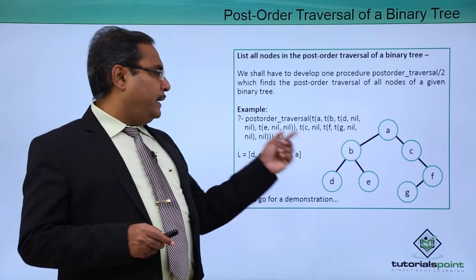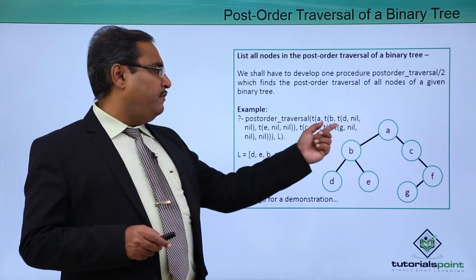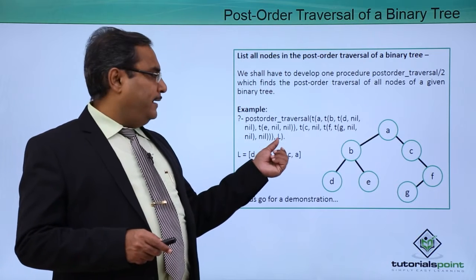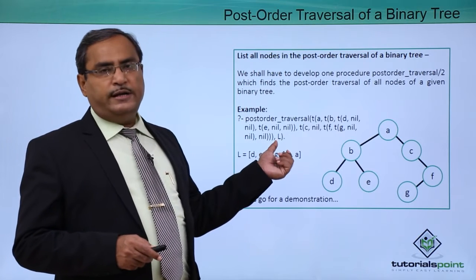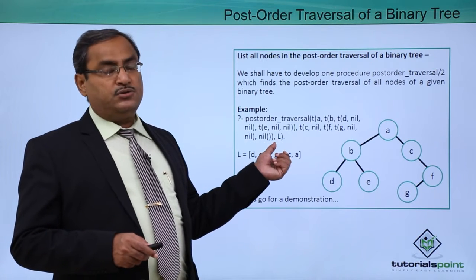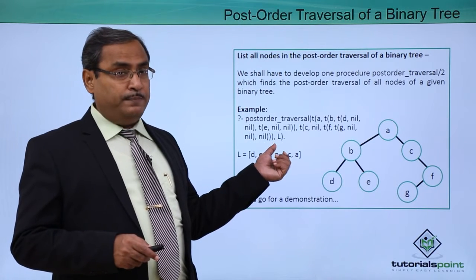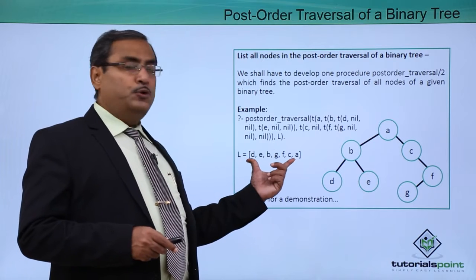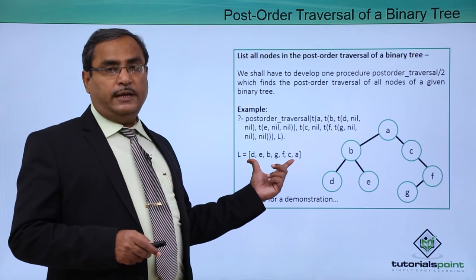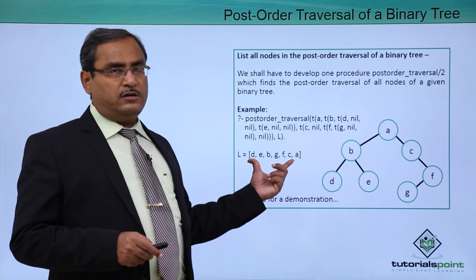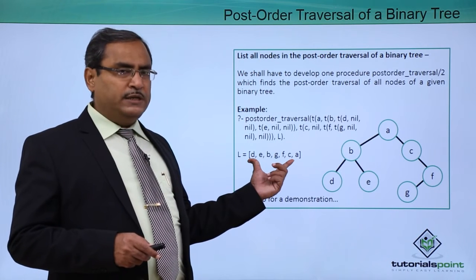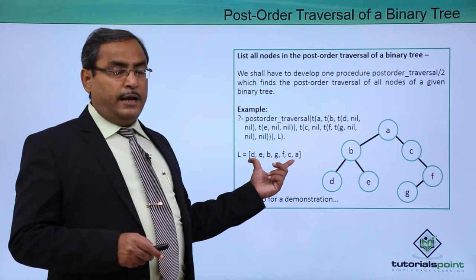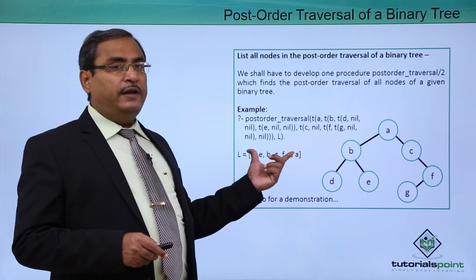This particular binary tree has been given as input, and L is written in capital letter — it is a variable. That is why this output will be obtained: the postorder traversal of this given binary tree in the form of a list.